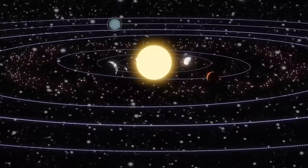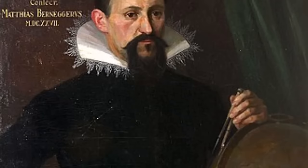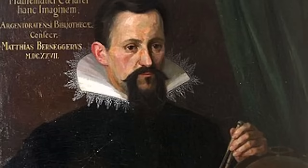Copernicus' heliocentric model faced resistance from both religious and scientific communities. It wasn't until the early 17th century that Johannes Kepler, a German mathematician and astronomer, provided crucial support for the heliocentric view.